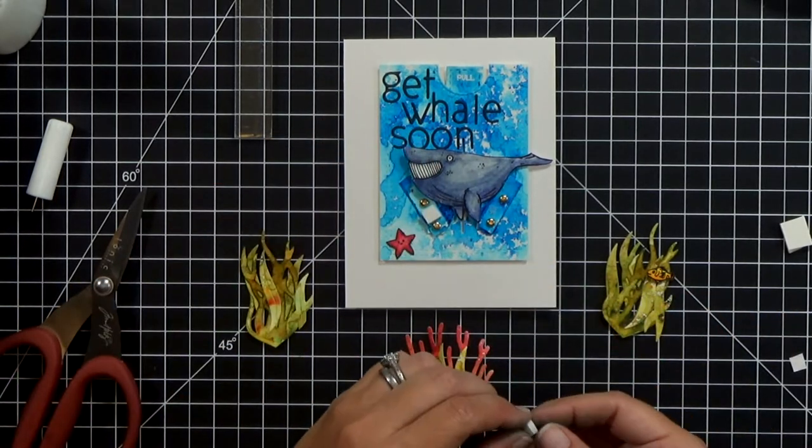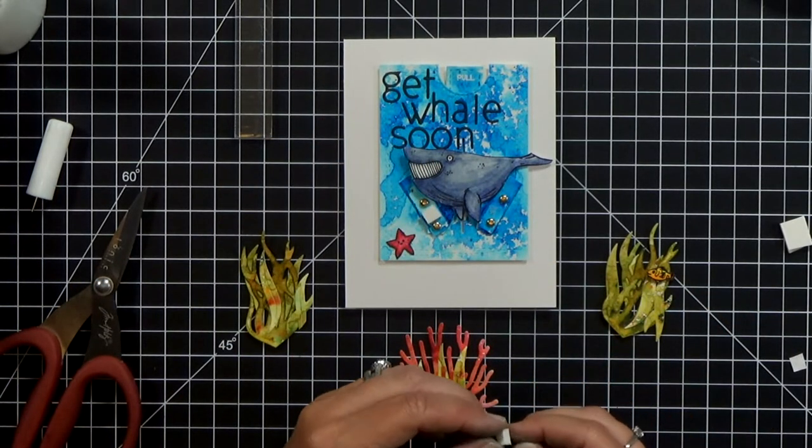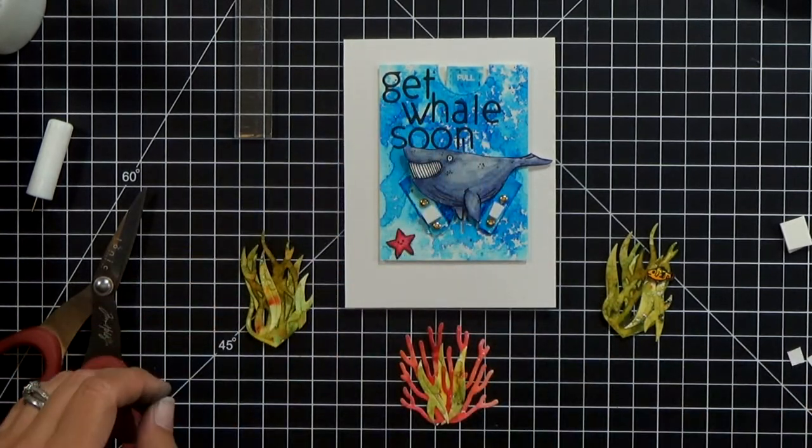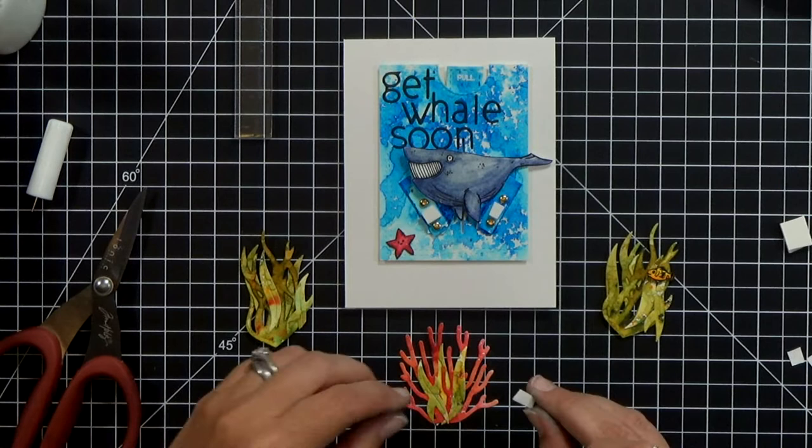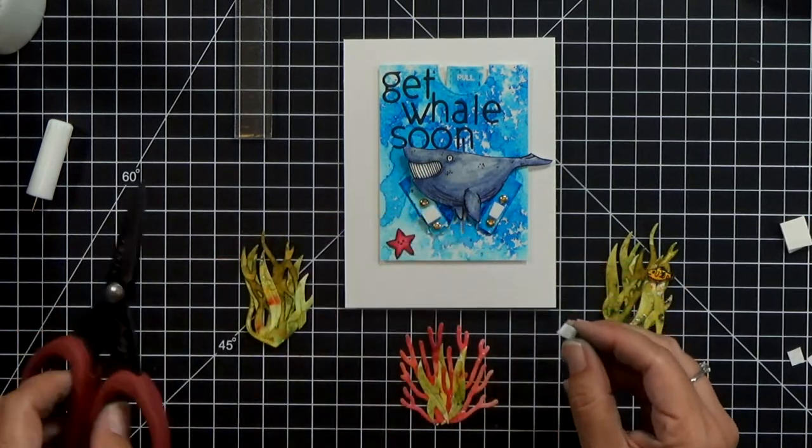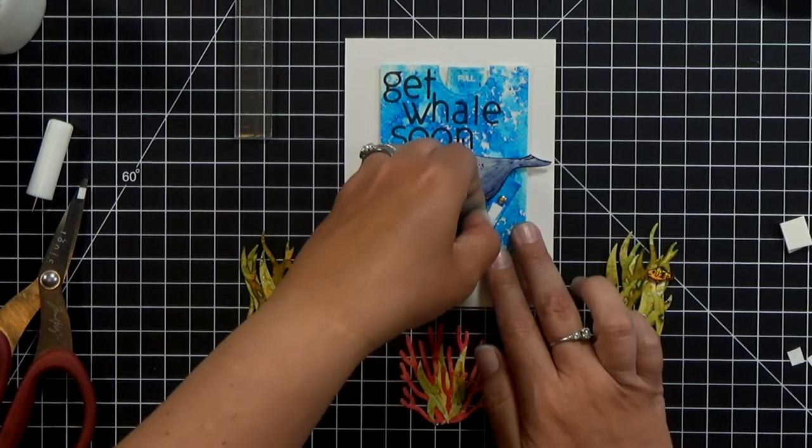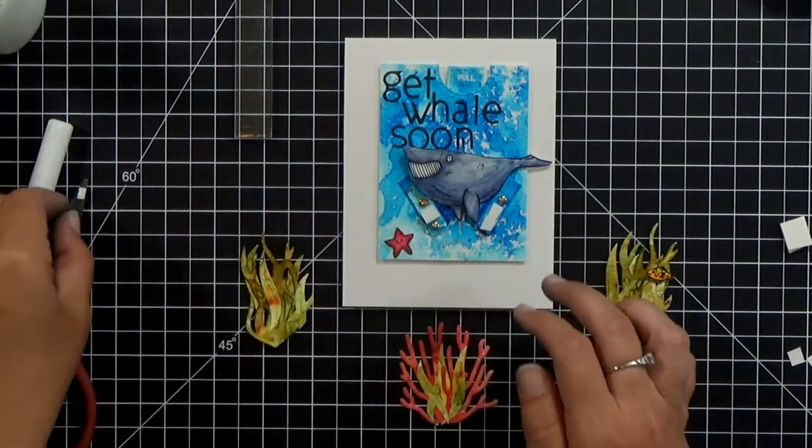I'm taking a double layer of foam tape here and I'm going to apply it in between those little brads and then I'm going to take a single layer of foam tape and just go on top of those brads just because the brad already sticks up a little bit so adding one layer of foam tape is equal to the height of the double layer right next to it.